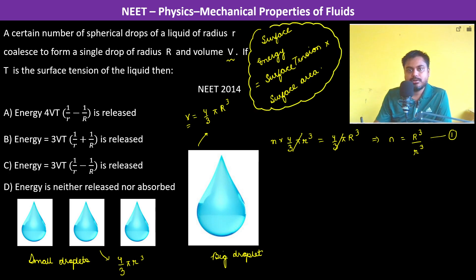Now initially energy, energy initially is going to be N into the surface tension into 4 pi r square and the final energy is going to be T into 4 pi R square. So now let us find the difference.